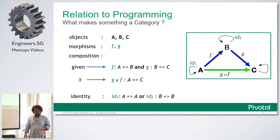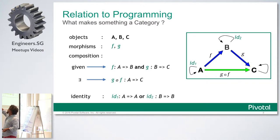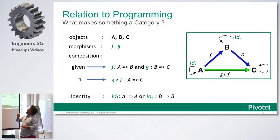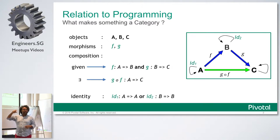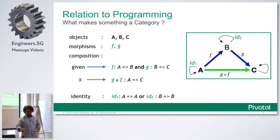Then there is the identity of the category. The identity function is defined for an object A — it is a morphism or function that takes input A and returns an A. The important distinction: if A is an integer, the identity function is not a function that takes one and returns two. It is a function that takes one and returns the same result — one — meaning it leaves the input unchanged. That's what we define as identity.